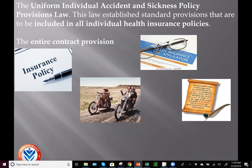First let's start with provisions. The entire contract provision says that the only things that can make up the contract are the application and the policy. If any riders were added or if it's been amended in any way by the insurer, it's all about the documents in a policy. It prevents the insurer from referencing any outside documents at a later date if you have to go to court.